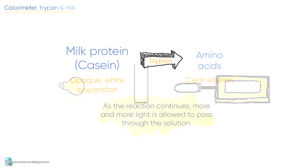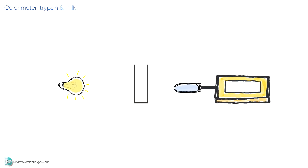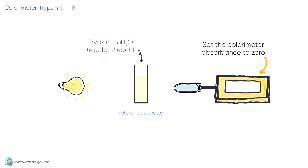Here is the procedure. First, place a fixed volume of trypsin solution and distilled water into a cuvette — for example, 1 cm³ of each. Use this as a reference cuvette to set the colorimeter absorbance to zero. This is the calibration of the colorimeter.